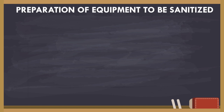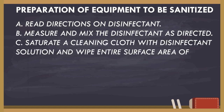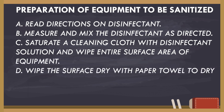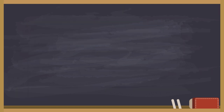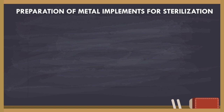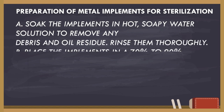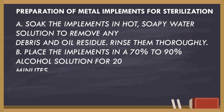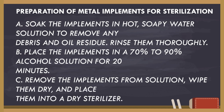For sanitization: first, read the directions on the disinfectant; measure and mix the disinfectant as directed; saturate a cleaning cloth with disinfectant solution and wipe the entire surface area of equipment; wipe the surface dry with a paper towel; and finally dispose of the sanitizing solution and used towels. For sterilization: soak implements in hot soapy water to remove debris and oil residue; rinse thoroughly; place in a 70%–90% alcohol solution for 20 minutes; remove and wipe dry; then place in a dry sterilizer.